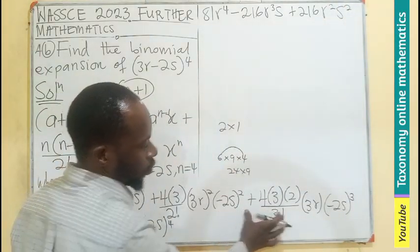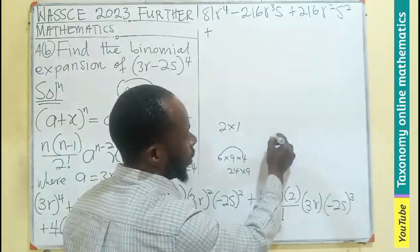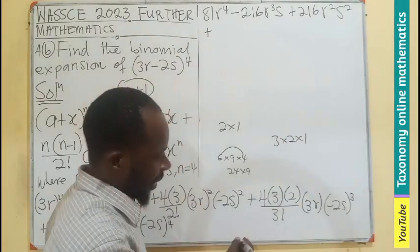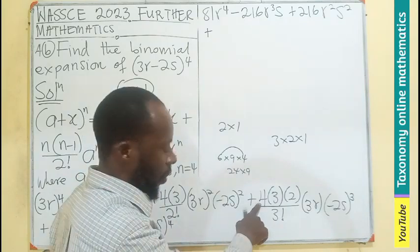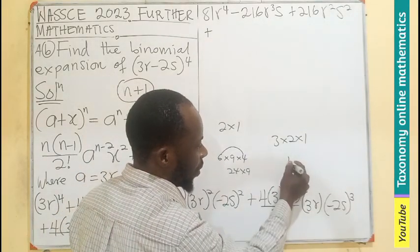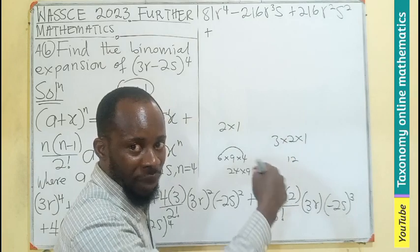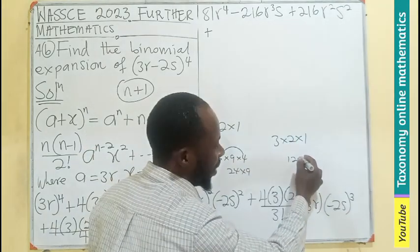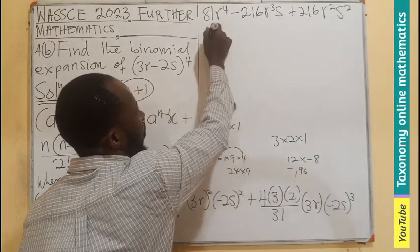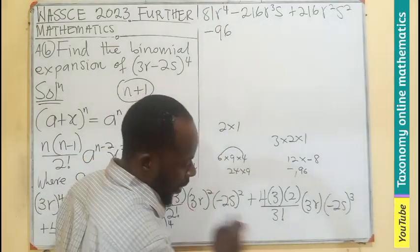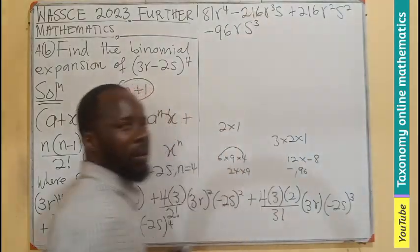For the next term: 3 factorial is 3 times 2 times 1, and the 2 times 1 cancels with the denominator, leaving us with 4. 4 times 3 gives 12 as the coefficient. Negative 2 exponent 3 is negative 8. So 12 times negative 8 gives negative 96, meaning this becomes minus 96 R exponent 1 S exponent 3.